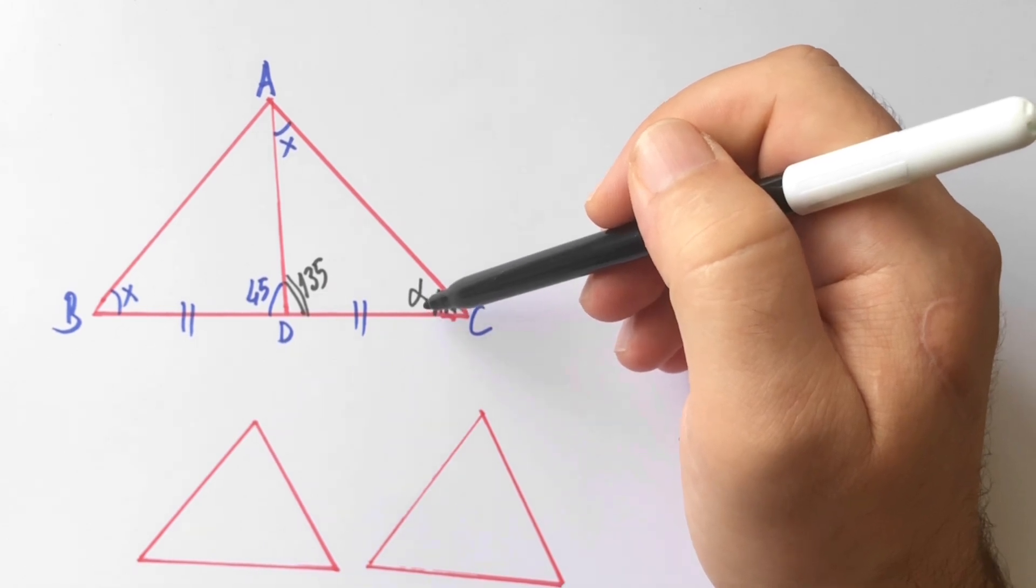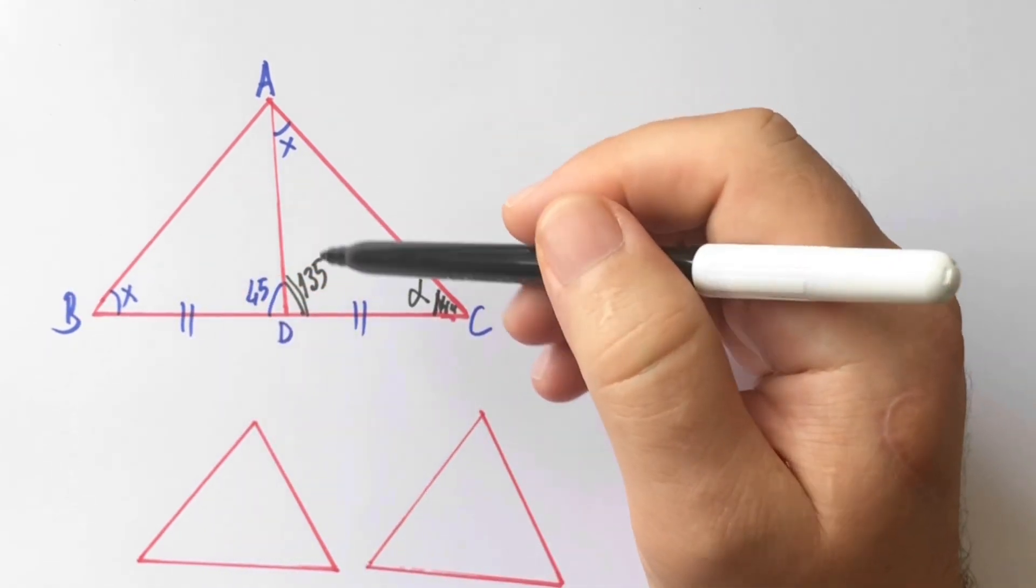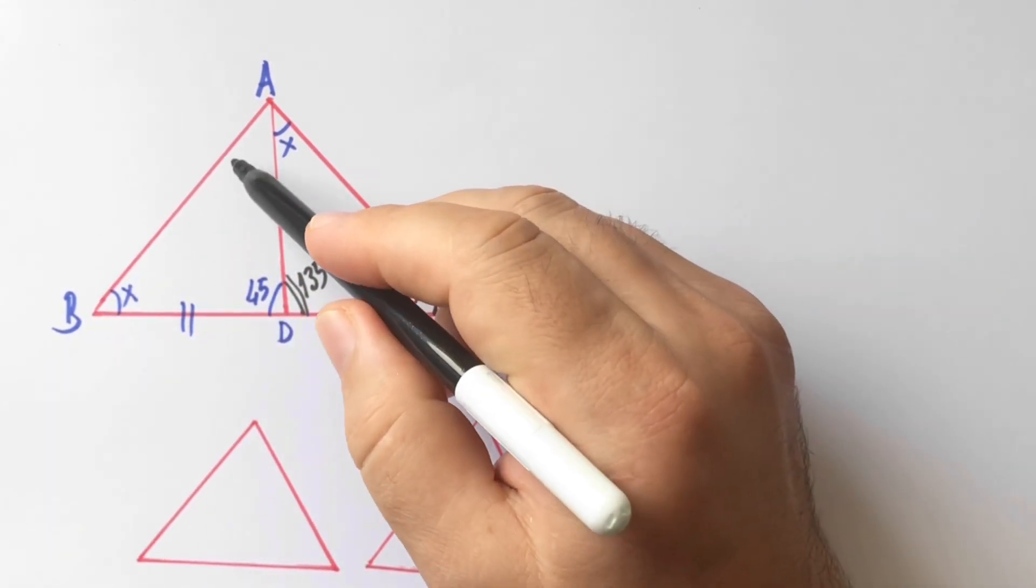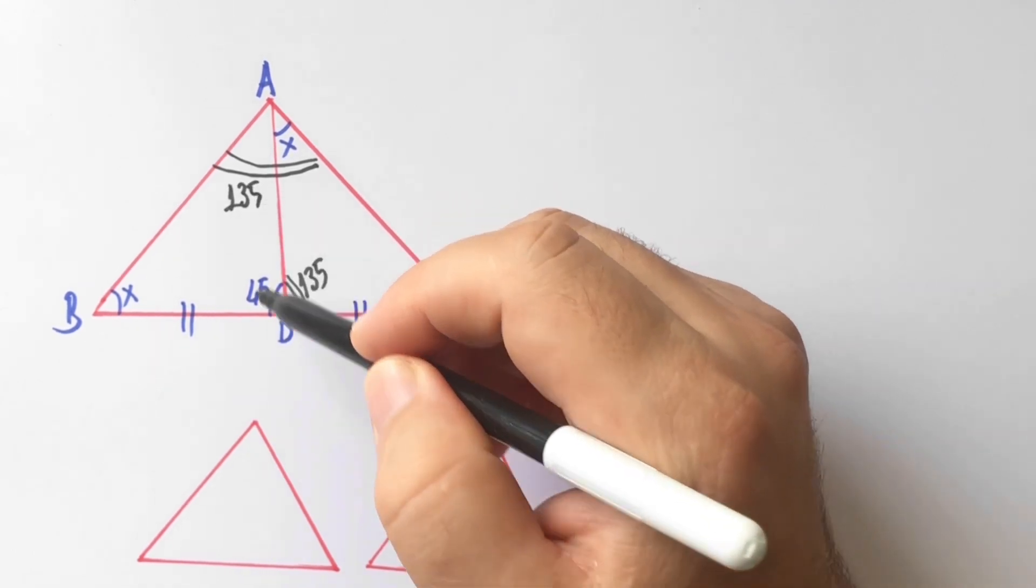If we focus on the biggest triangle, we can see the same angles. X, alpha, here must be 135 degrees.